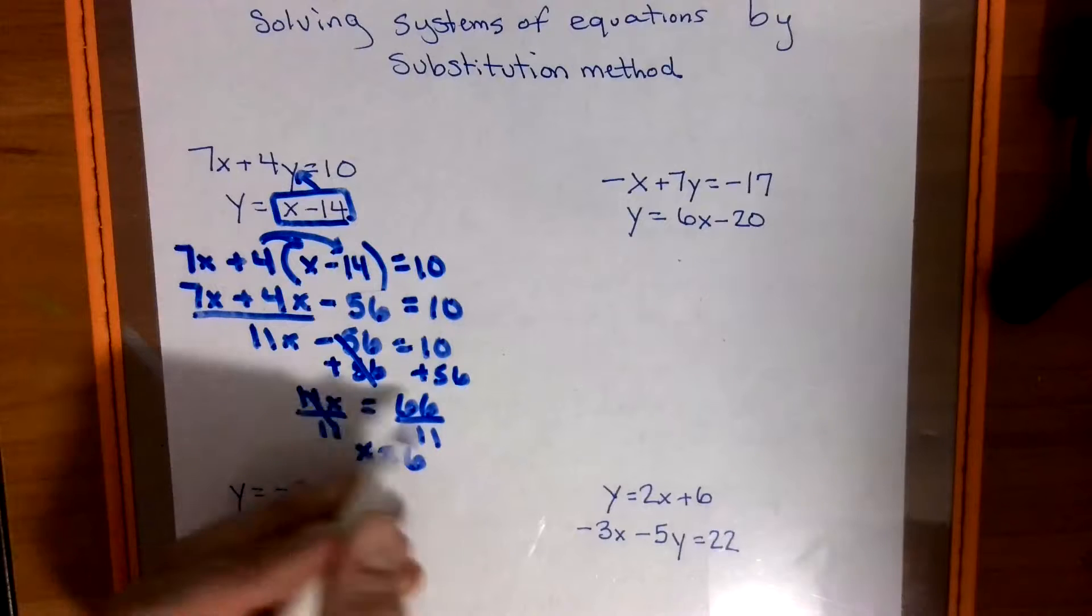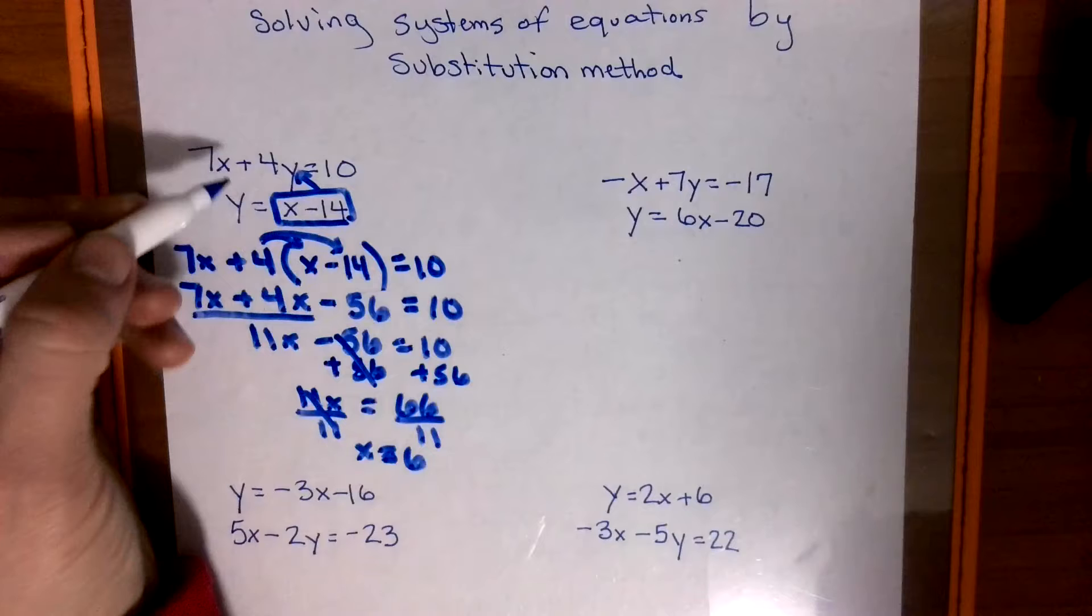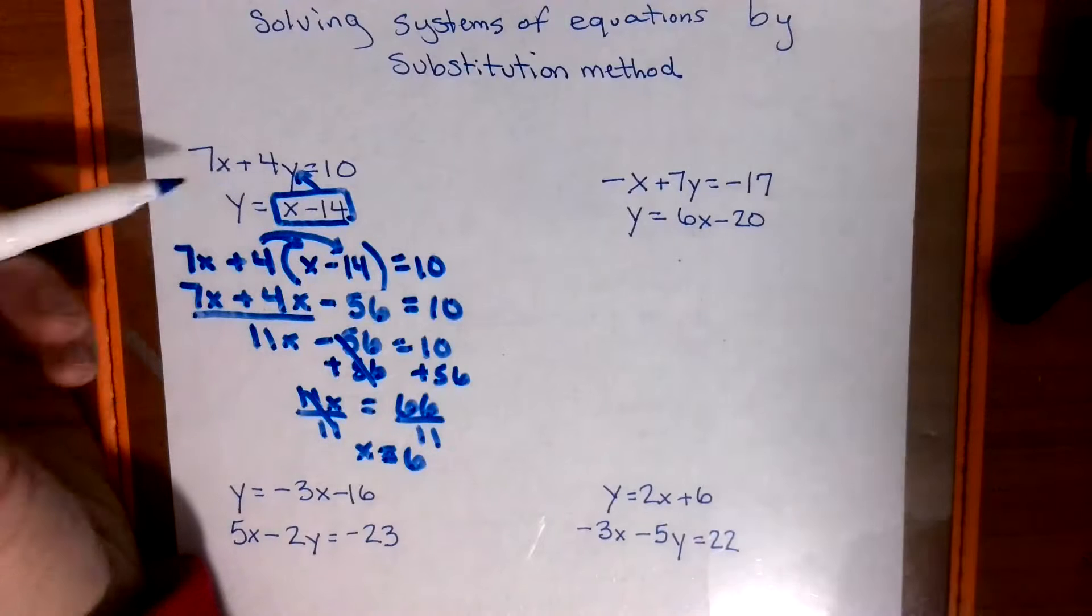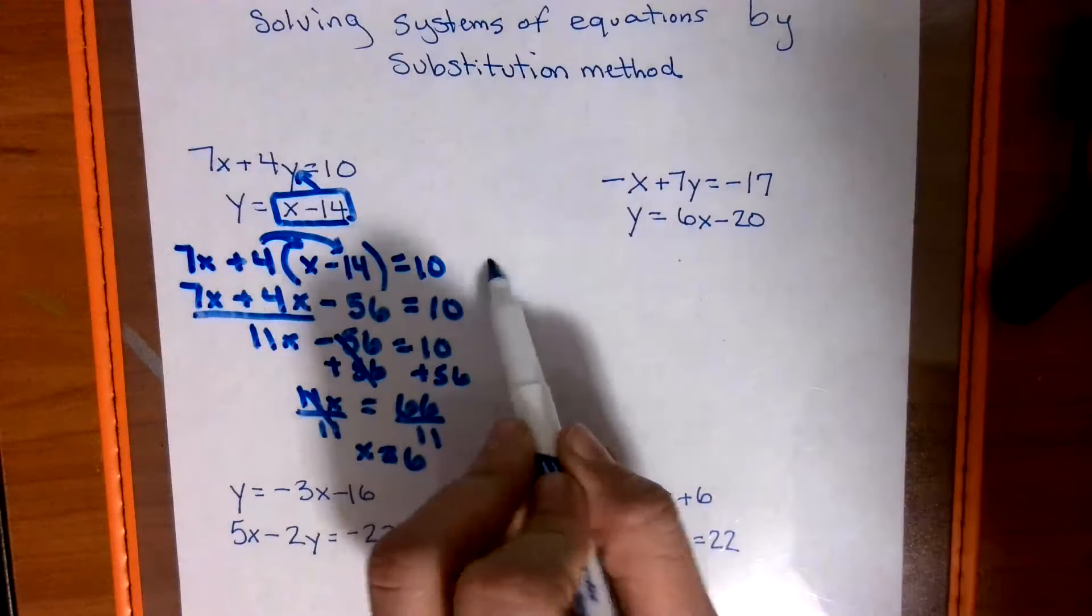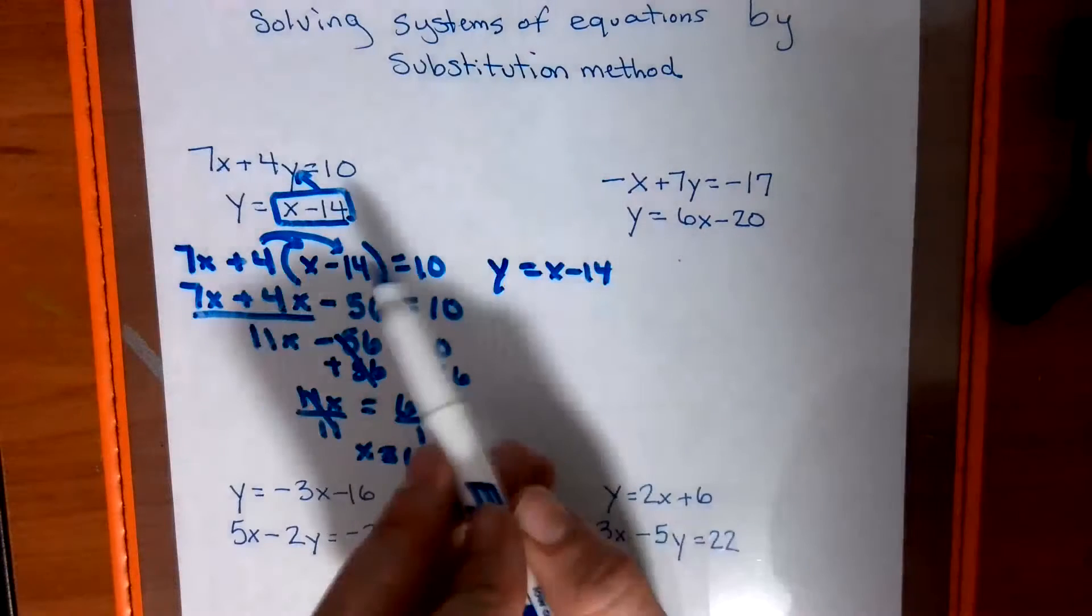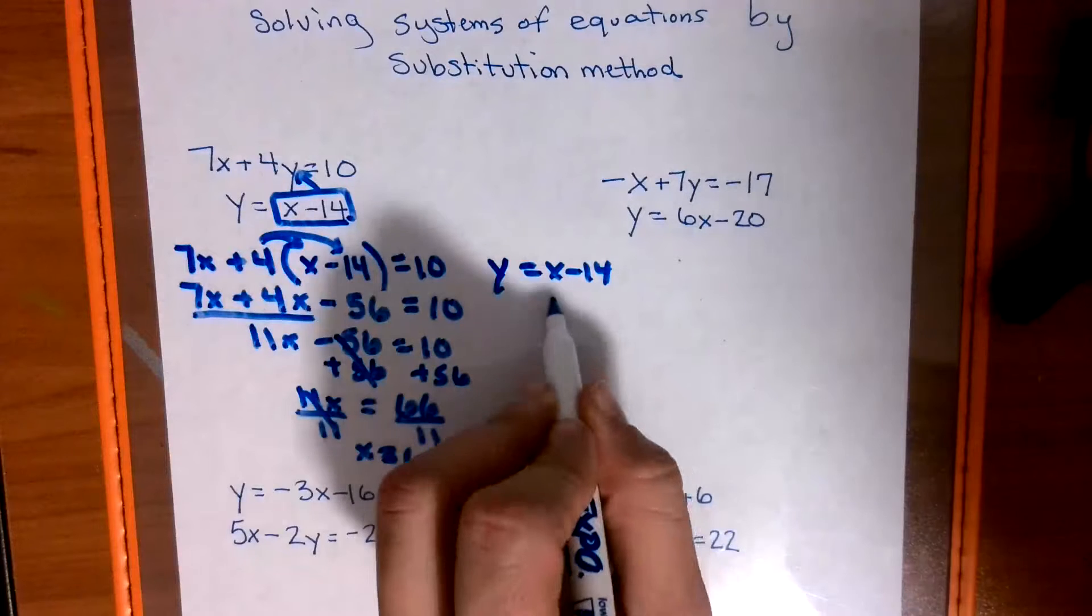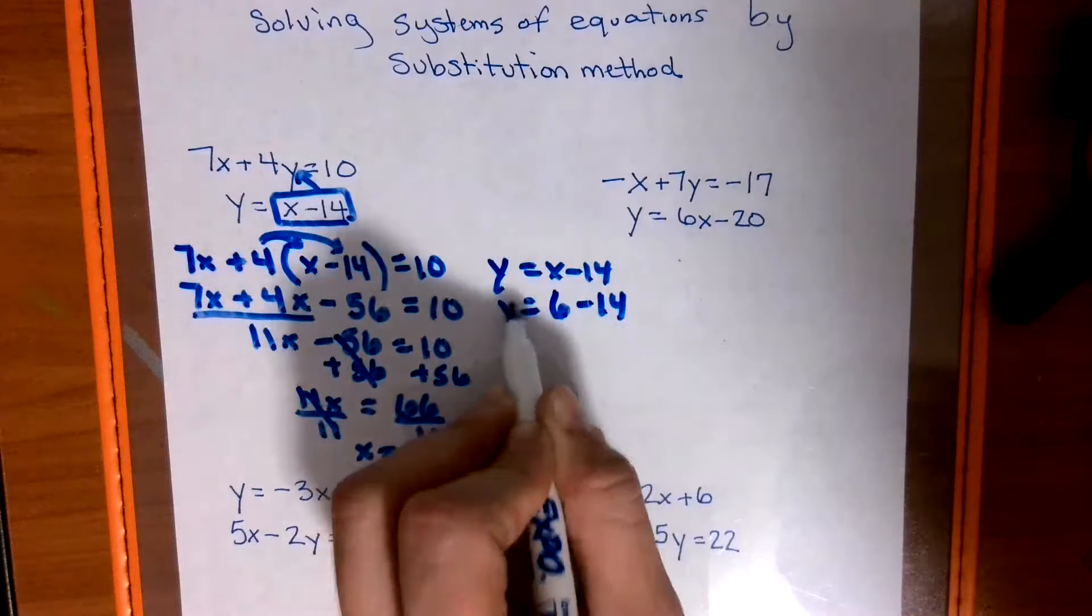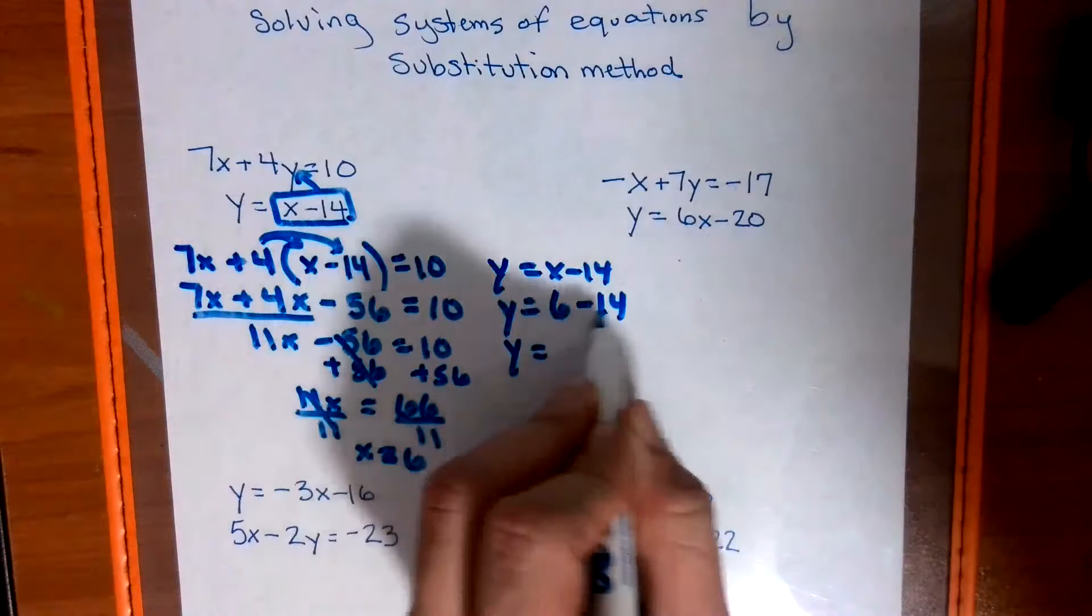And now we have to take the x equals 6 and plug it back into the easier of the two equations. Now, I would plug it back into the bottom one because this one's a little more complex. So you rewrite the bottom, y equals x minus 14. Now, remember, you could plug it into either one of these top two. It doesn't matter. x was 6. So in place of this x, we're going to have a 6.